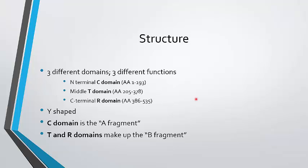There are three different domains that make up the two different fragments. There's an N-terminal C domain, a middle T domain, and a C-terminal R domain. Thus the protein is Y-shaped and the C domain contains the A fragment and the T and R domains make up the B fragment. The T and R domains are used for cell recognition and transfer.